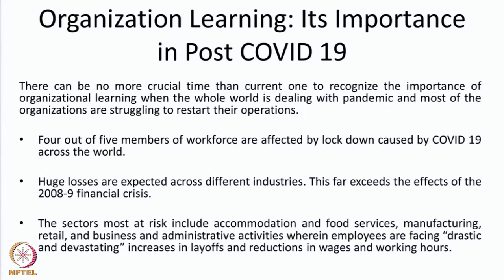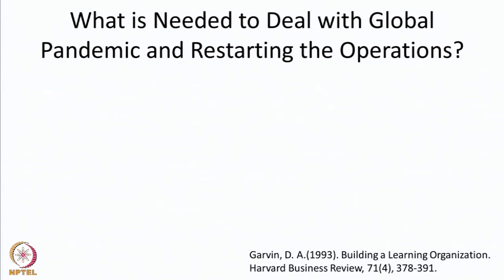The sectors most at risk include accommodation and food services, manufacturing, retail, and business and administrative activities, where employees are facing drastic increases in layoffs, reduction in wages and working hours. This is a time of crisis where organizations have to learn very fast something they have not learned earlier. There is no precedence for dealing with this kind of pandemic, and organizations have to learn how to survive and come out of the recession.